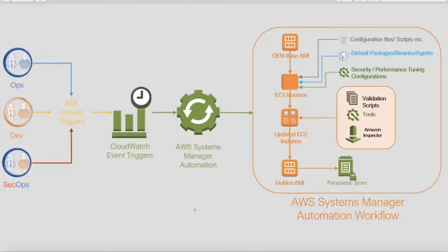In the 100 EC2 machines, we can track software, version, and license details. We have complete inventory details at a high level. AWS System Manager also helps with OS updates and patch management, and we can set scheduling windows for installing software or applying patches.